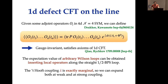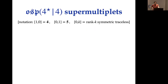The point of view I will adopt during this talk is that of the analytic bootstrap, where symmetries are very important because they constrain the observables. The first thing one has to study in this setup is the supermultiplets and representation theory of OSP(4|4).